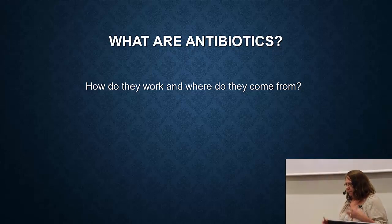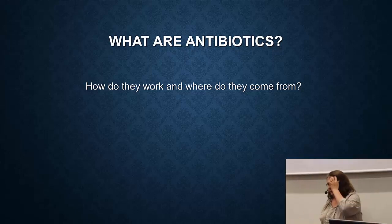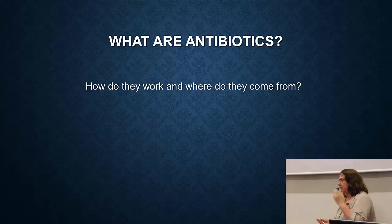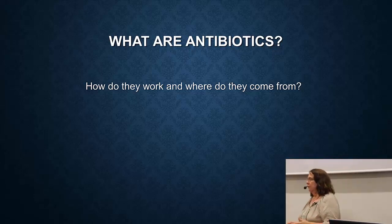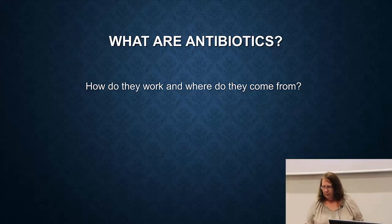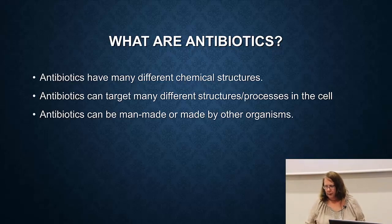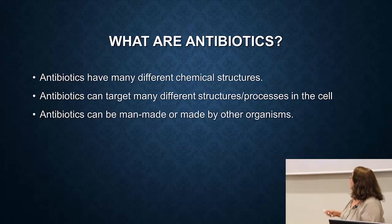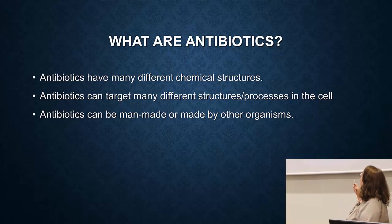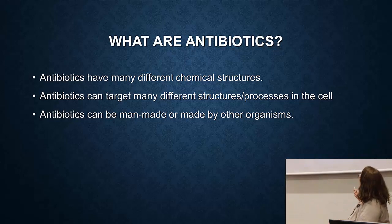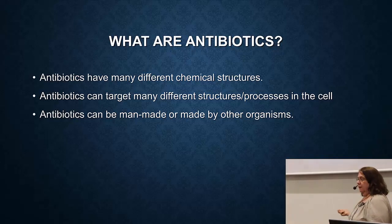Antibiotics — how do they work and where do they come from? The purpose of antibiotics is to either kill or stop the growth of bacteria. Antibiotics have many different chemical structures. They can target many different structures or processes in the cell, and they can be man-made or produced by other organisms.